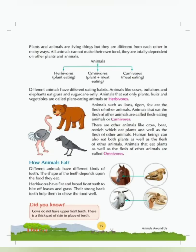Plants and animals are living things, but they are different from each other in many ways. Animals cannot make their own food — they are totally dependent on other plants and animals. Plants can prepare their own food by the process of photosynthesis in the presence of air, water and sunlight. But animals are totally dependent on plants directly or indirectly. Either they eat plants and plant products, or they eat plant-eating animals.